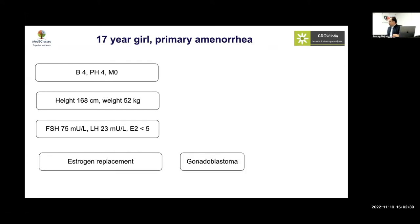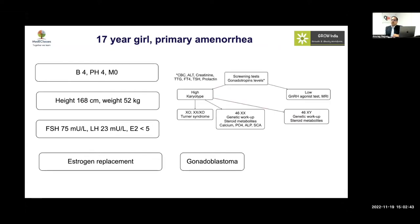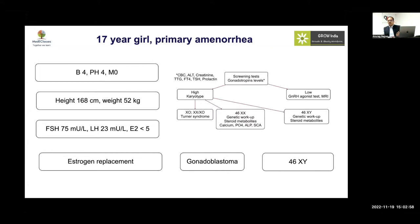What happened on follow-up was a bit depressing: the child developed a gonadoblastoma, because a proper karyotype assessment was not done. When the karyotype was checked, it was actually an XY phenotype. This gives the big message that even with classical features of hypergonadotropic hypogonadism, we should always check the karyotype.